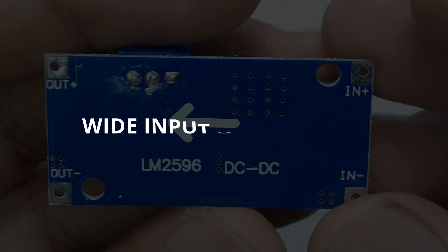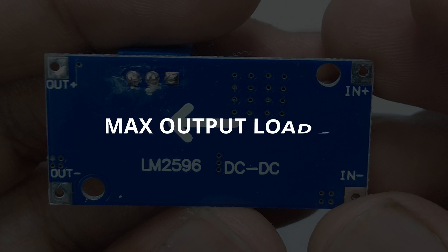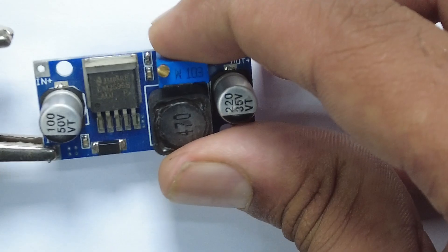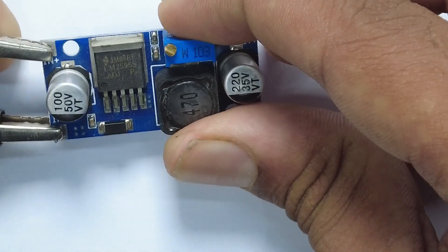This buck converter has a wide input voltage range up to 40 volts, 3 ampere output load current, and adjustable output voltage from 1.23 to 37 volts. This is very easy to use. Connect the power supply to the input.